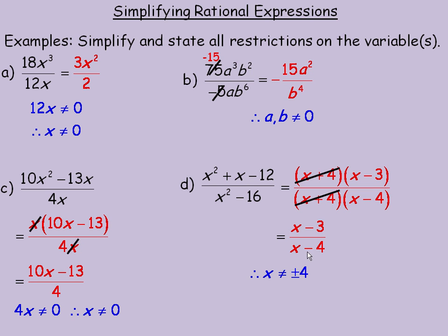And also 4 here, 4 minus 4 would also make the denominator have a value of 0. Now instead of writing them separately, I can say that x is not allowed to equal plus or minus 4.